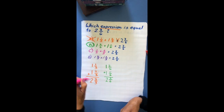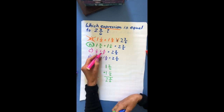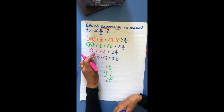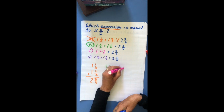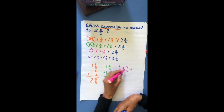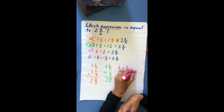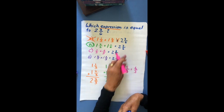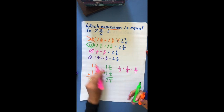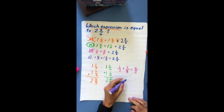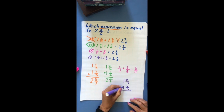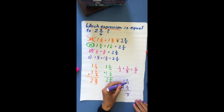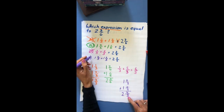I double check the remaining options. The next one isn't a mixed number so I solve it horizontally — it does not equal 2 and 3 sixths. The last option is 1 and 2 thirds plus 1 and 2 thirds. Adding the fractions: 2 plus 2 is 4. Adding whole numbers: 1 plus 1 is 2, giving 2 and 4 thirds — that doesn't look like 2 and 3 sixths. So my answer is confirmed.